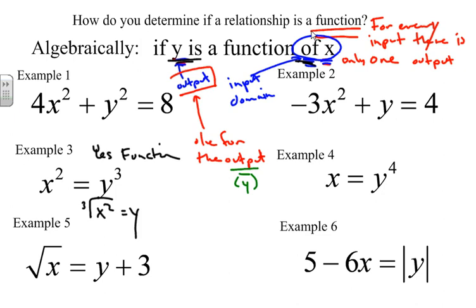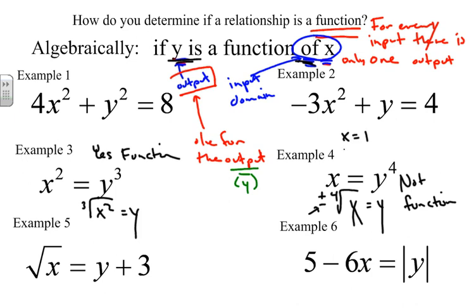For the next example, we solve for Y to the fourth and take the fourth root. Because we're taking an even root, we have two different values for Y: plus or minus the fourth root of X. So this is not a function. For example, if I plug in 1, I get plus or minus the fourth root of 1, which is plus or minus 1 — two different values for Y for every input.